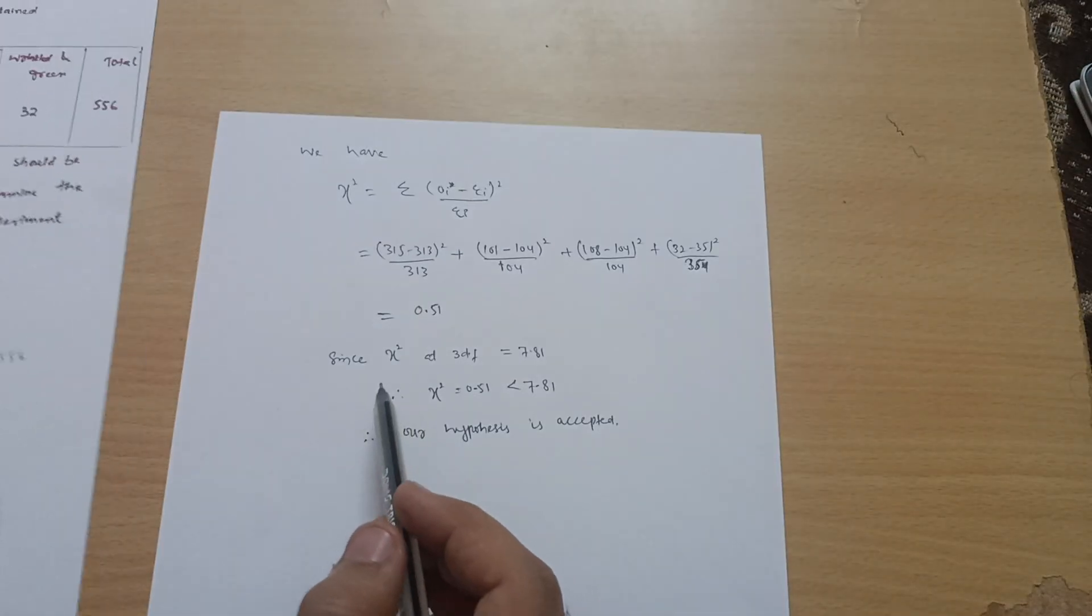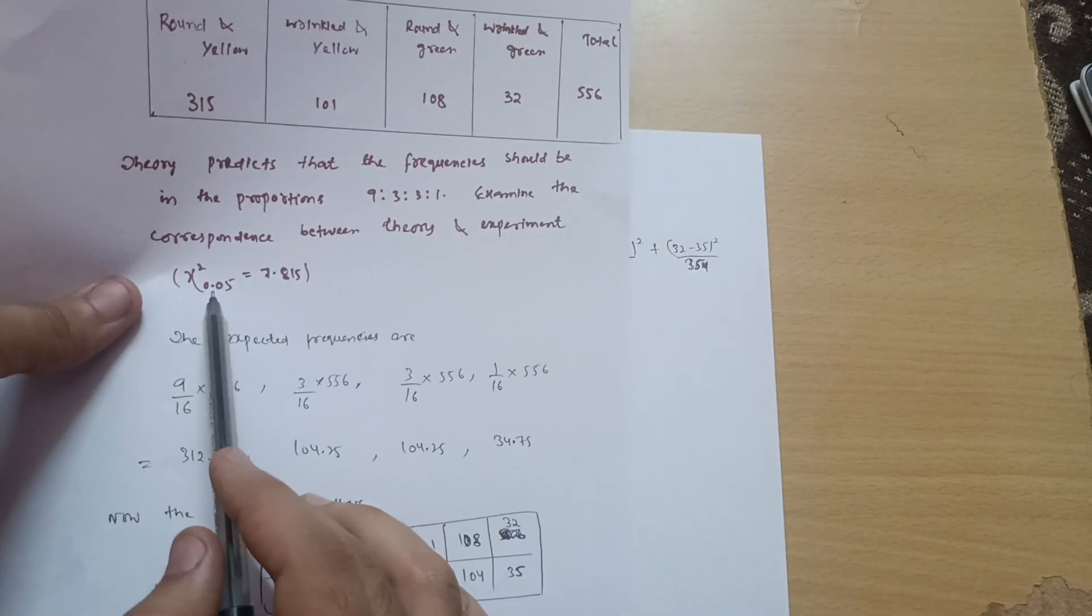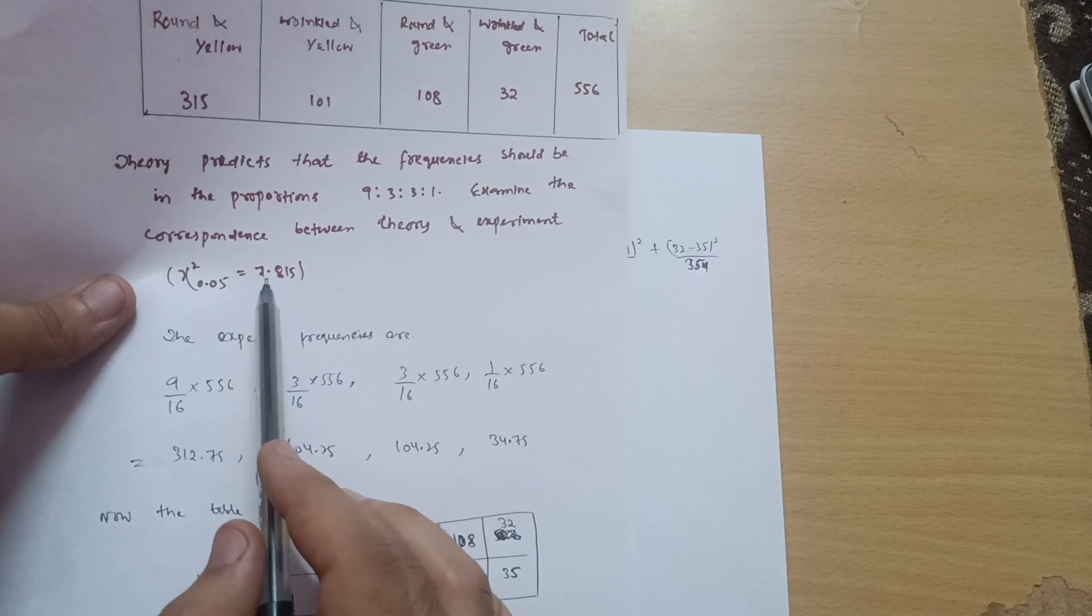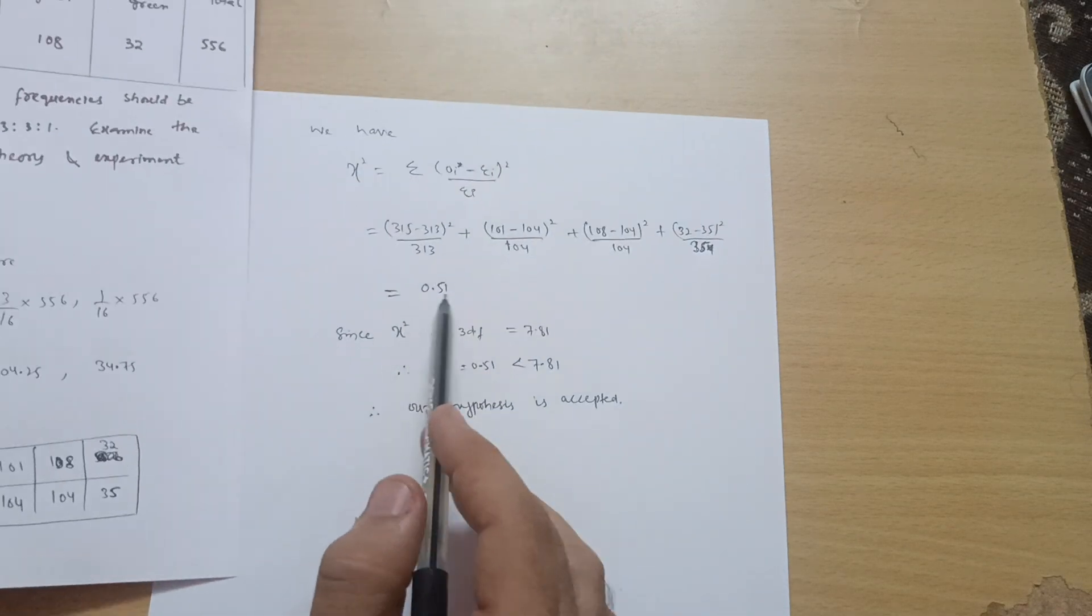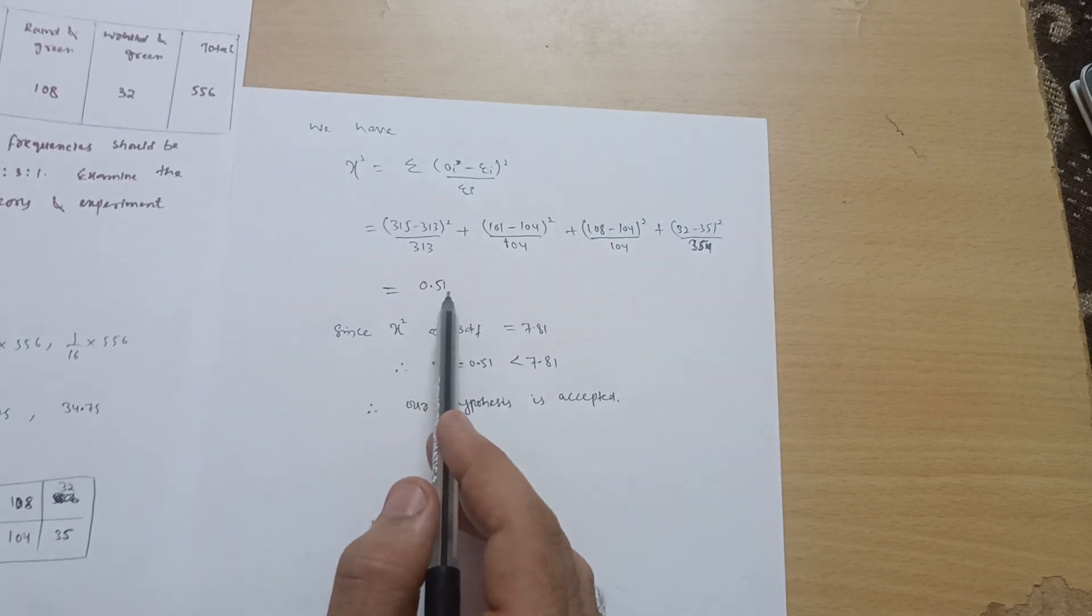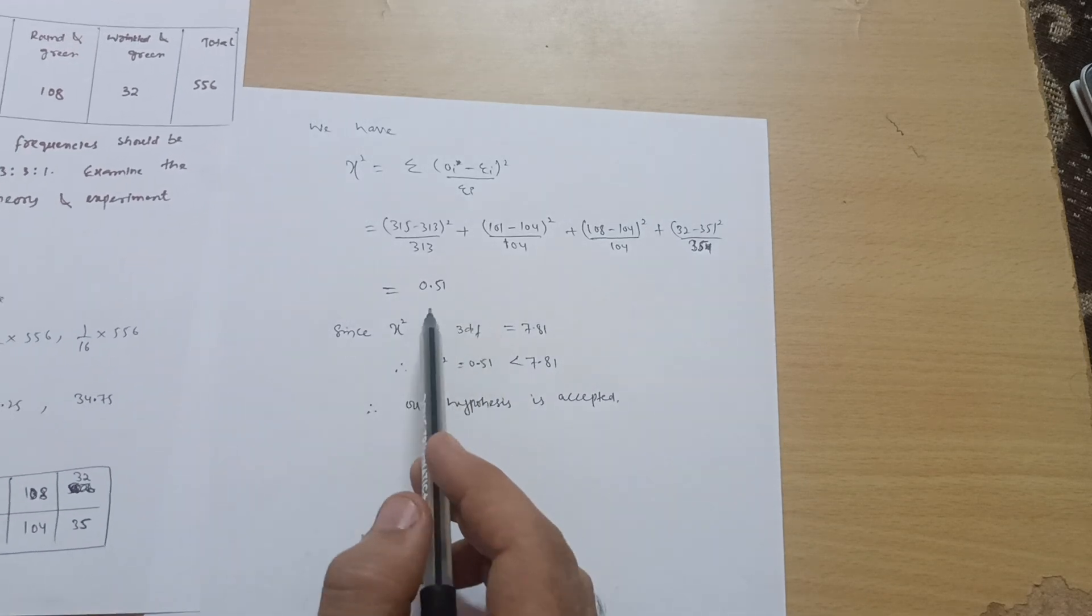But in the question it is mentioned that the chi-square at 0.05 is equal to 7.815 at the 5% level of significance. So here we are getting 0.51 value from the calculation, so it is obviously less.